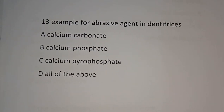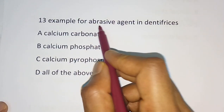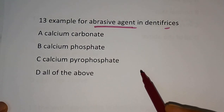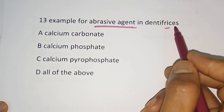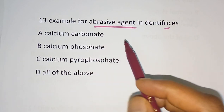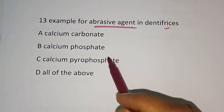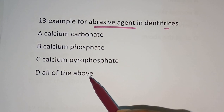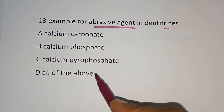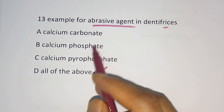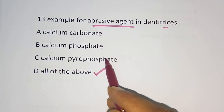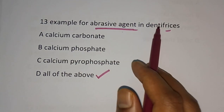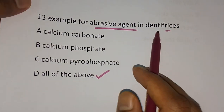Question number 13: Example for abrasive agent used in dentifrices — Calcium carbonate, Calcium phosphate, Calcium pyrophosphate, or All of the above? The correct answer is all of the above. Calcium carbonate, calcium phosphate, and calcium pyrophosphate can all be used as abrasive agents in dentifrices.